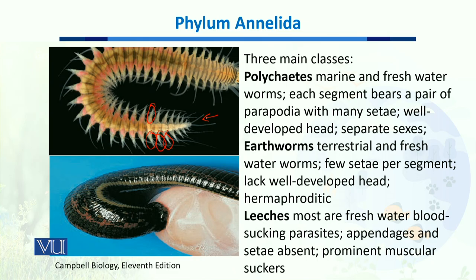The second class is earthworms (Oligochaeta). They are terrestrial and freshwater worms and have fewer setae per segment compared to the polychaetes. They also lack a well-developed head.